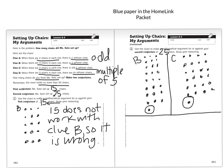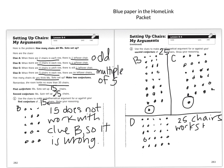Clue D: when there are five chairs in each row, there are no leftover chairs. Counting to 25 in groups of five... when there are five chairs in each row, there are no leftover chairs. Does it work? Yes, it does. So we would say 25 chairs works because it fits all the clues.